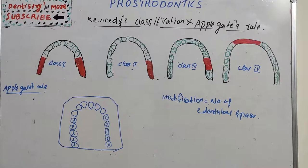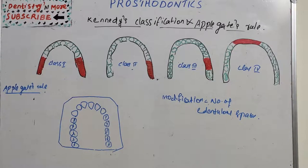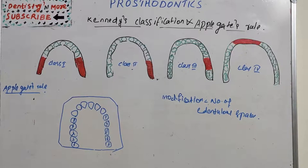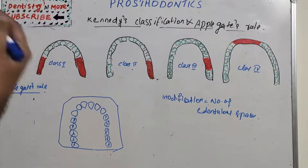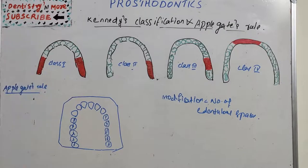Hello everyone, welcome back to another session in Dentistry and more. Today's topic in prosthodontics is Kennedy's classification of edentulous space and Applegate's rules. It's a very common question and a simple one. There are many classifications put forward to classify edentulous spaces, but the most accepted one is Kennedy's classification.